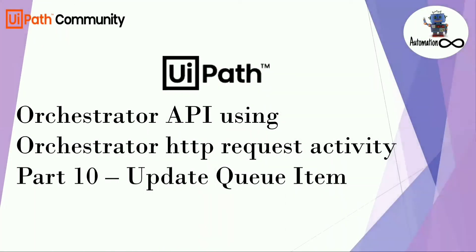Welcome to my YouTube channel Automation Loop. Suppose there are a huge amount of queue items present in your orchestrator queue and you want to update or edit a specific queue item. In this video we are going to see how we can update or edit a specific queue item with the help of Orchestrator API, doing it from UiPath Studio using the Orchestrator HTTP Request activity.